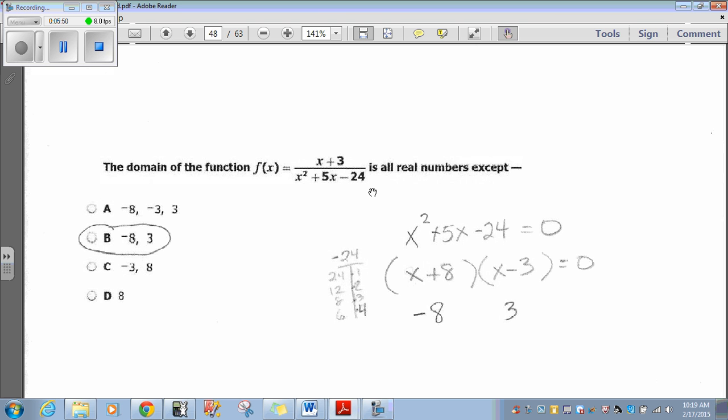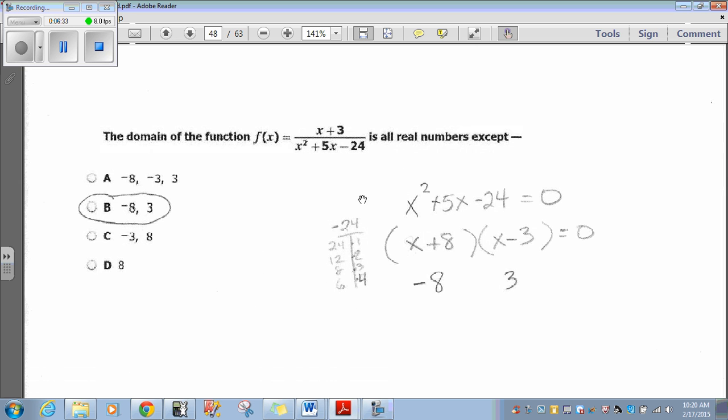If we factor that, that factors to two binomials, finding two numbers that add to positive 5 and multiply to negative 24. That would be positive 8 and negative 3. So x plus 8 times x minus 3 equals 0. So x plus 8 equals 0, x minus 3 equals 0. Our answer is going to be positive 3 and negative 8. The only answer that fits is choice B. The domain is all real numbers except for negative 8 and 3.